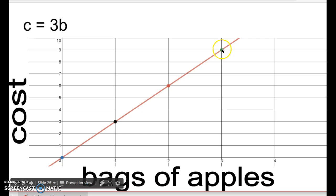This point here, this green one, is the point 3, 9. And what does that mean? That means we bought three bags of apples and it costs $9. That's simple.